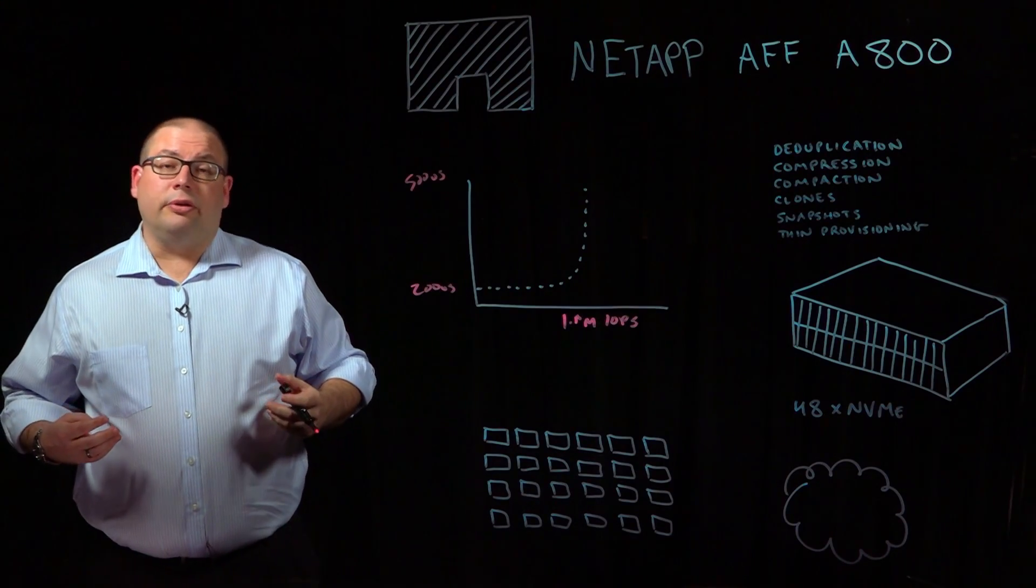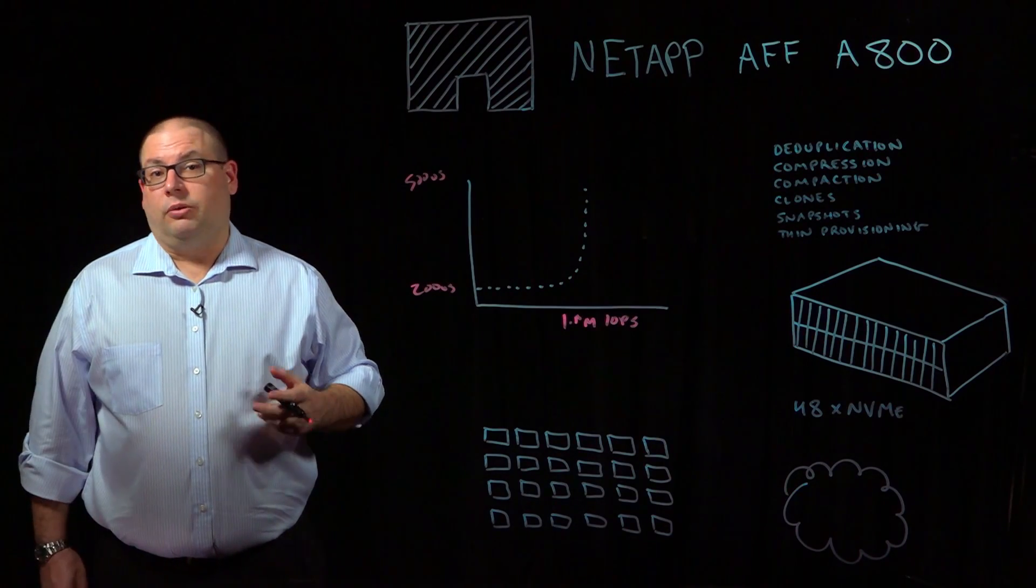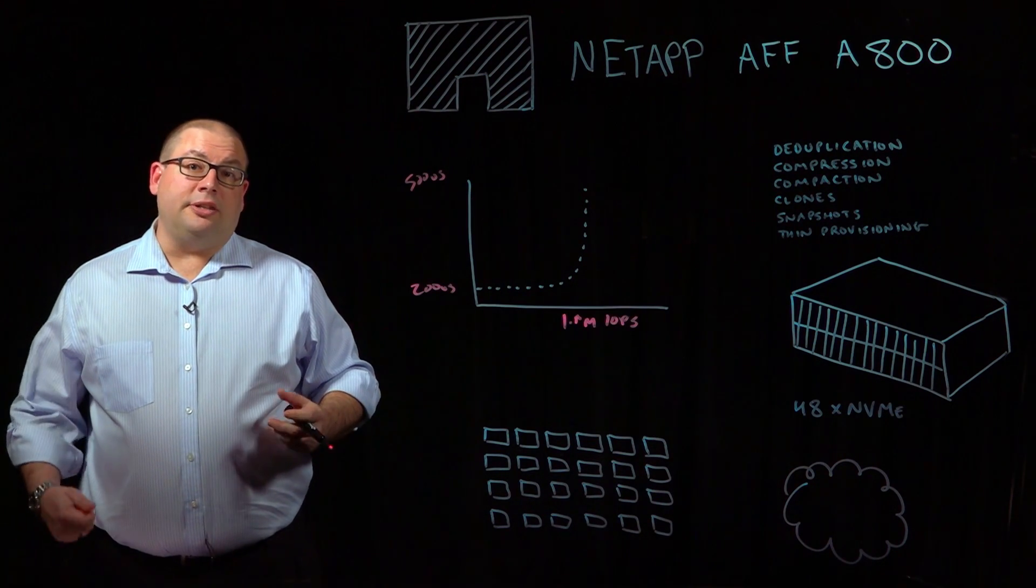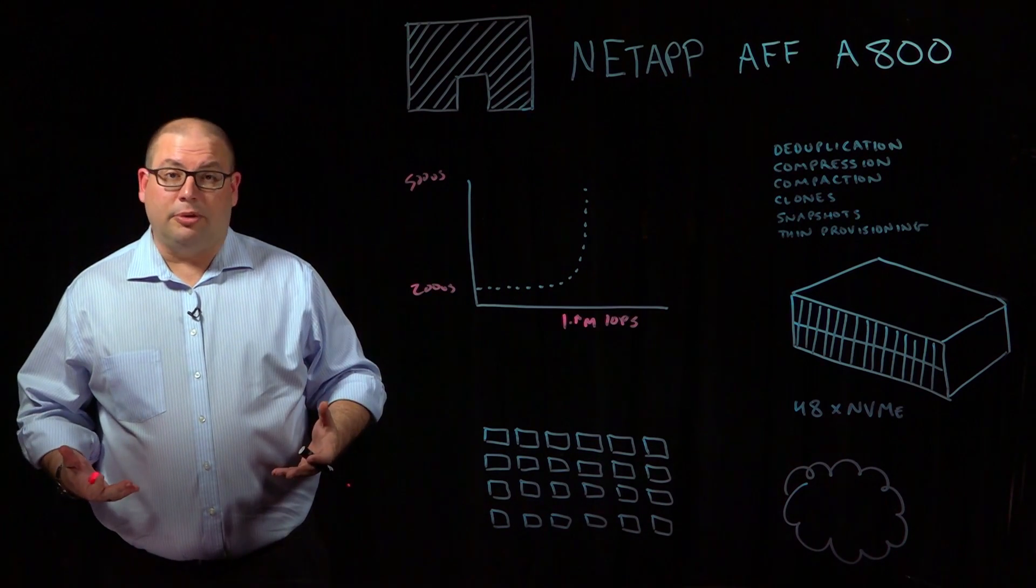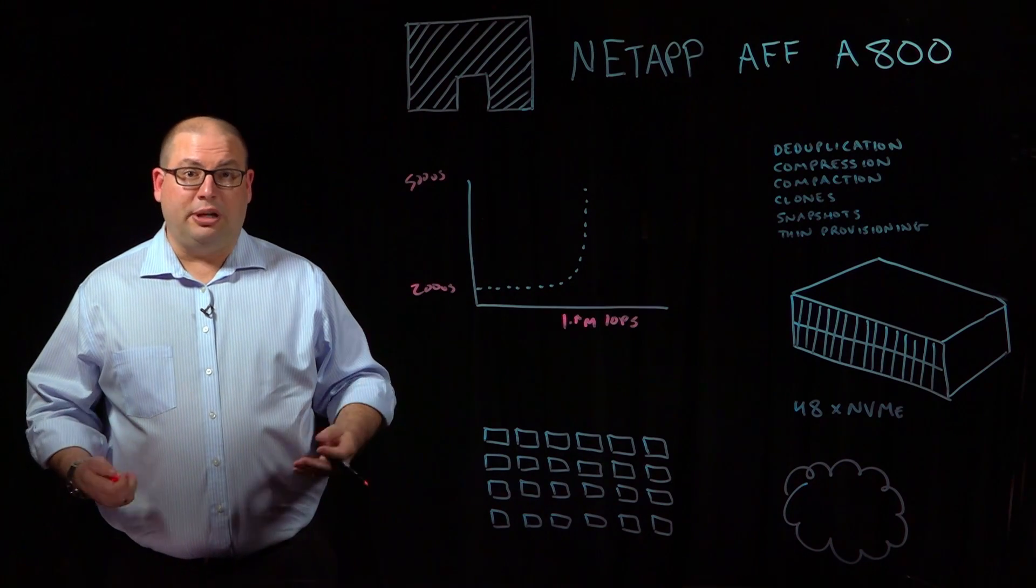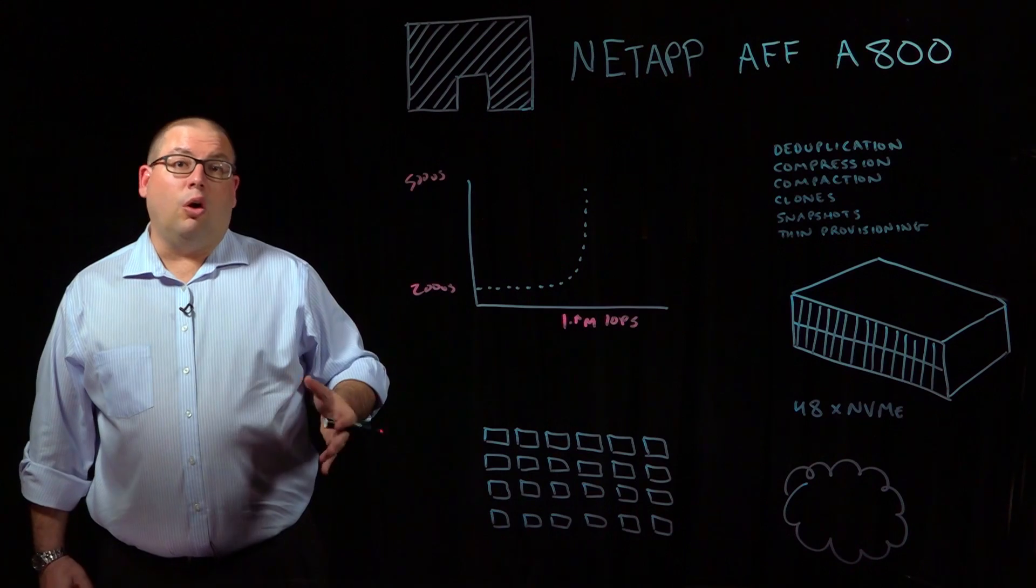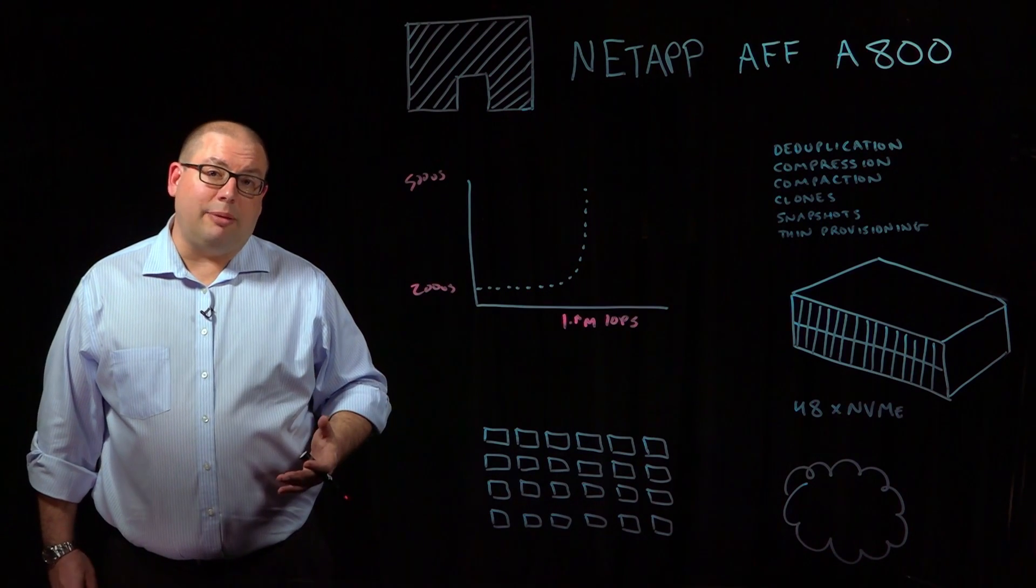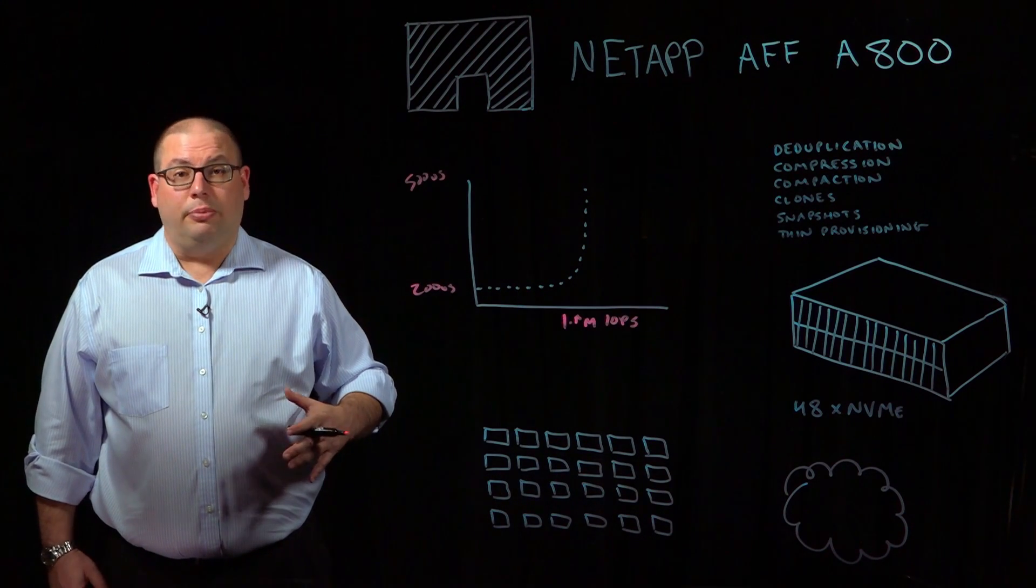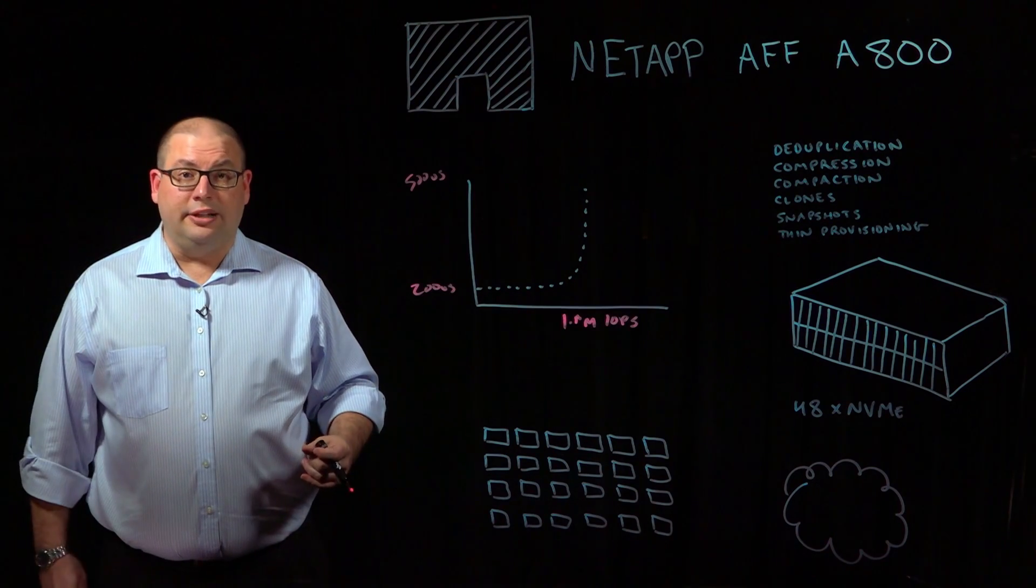The A800 is the world's first end-to-end NVMe over fiber channel solution. This means customers with existing fiber channel infrastructures, switches and HBAs, and existing applications can take advantage of converting over to NVMe over fiber channel to increase performance from the A800 and further reduce latency.